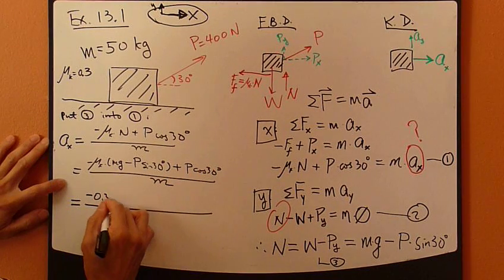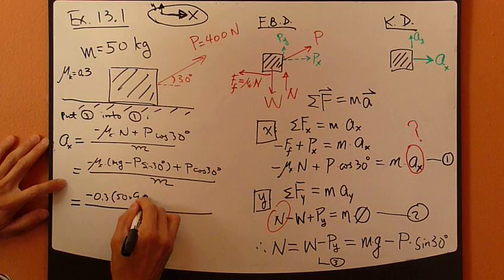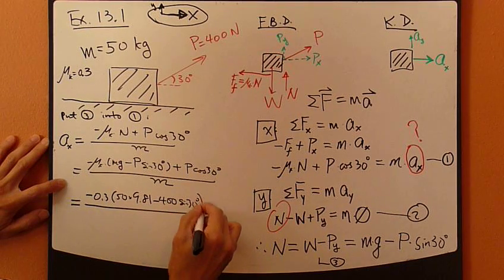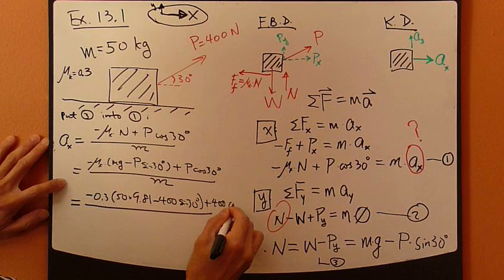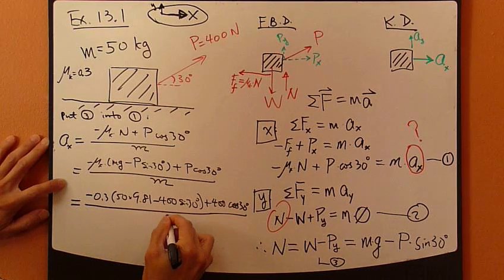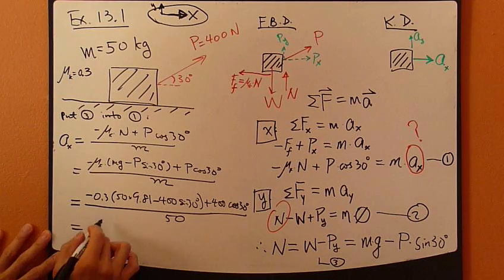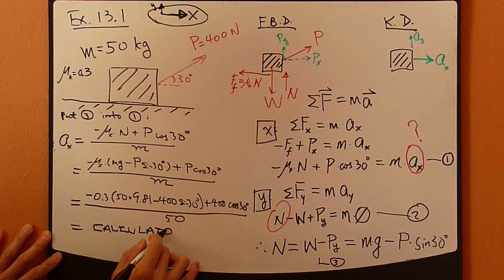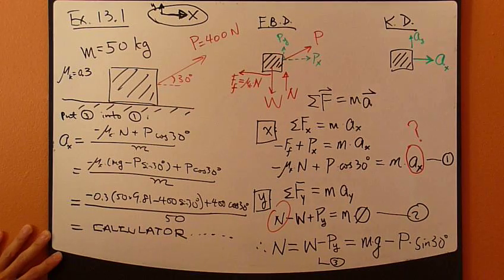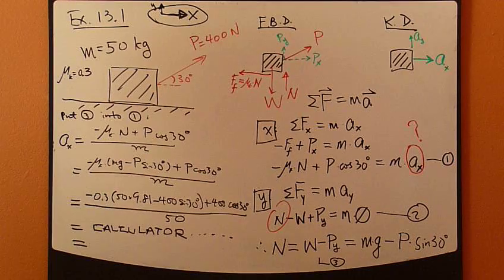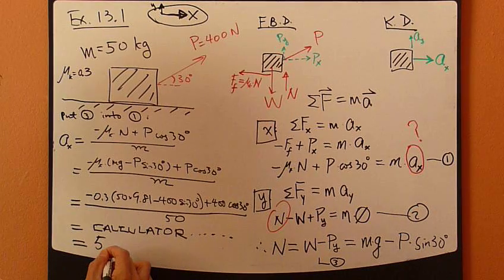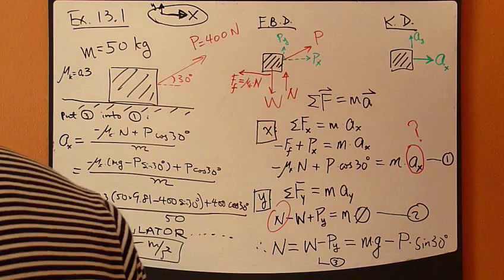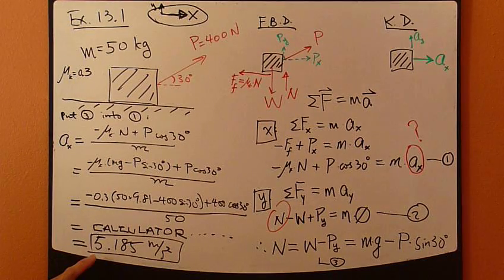Now, you plug in numbers. Negative mu_k, 0.3, mass is 50 times 9.81 minus 400 newton sine 30 plus 400 cosine 30 divided by 50. So, now, you use your calculator. That's the step. Then, you solve for a_x, which is 5.185 meter per second squared. So, now, you solve for acceleration.